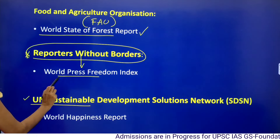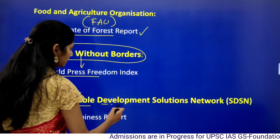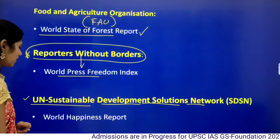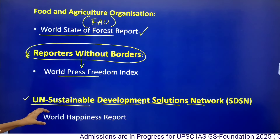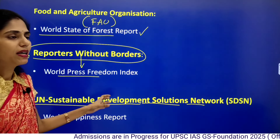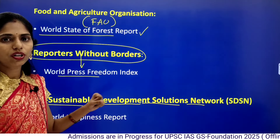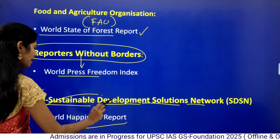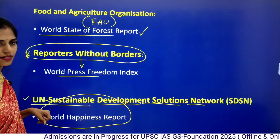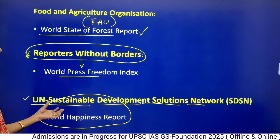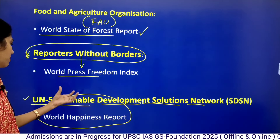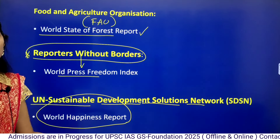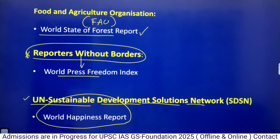Next is the United Nations Sustainable Development Solutions Network. This organization releases the World Happiness Index. So the World Happiness Index is released by the United Nations Sustainable Development Solutions Network.